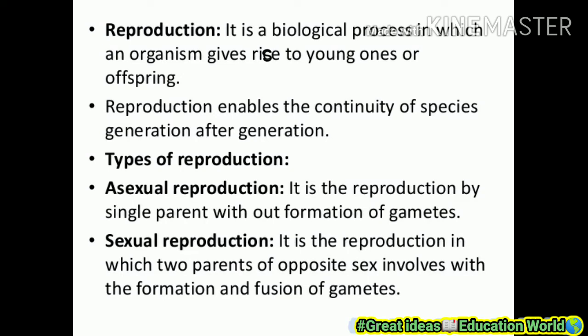Now the definition of reproduction: it is a biological process by which an organism gives rise to young ones or offspring. Reproduction enables the continuity of species generation after generation. Types of reproduction: asexual reproduction — it is reproduction by a single parent without formation of gametes. Sexual reproduction — it is reproduction in which two parents of opposite sex are involved with the formation and fusion of gametes.